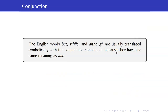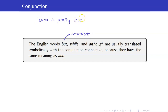Take note that the English words 'but,' 'while,' and 'although' are usually translated symbolically with the conjunction connective because they have the same meaning as 'and.' In the English language, we are using these words to just show contrast, but technically speaking it is just the same as 'and.' Suppose that we have the statement 'Lara is pretty but disorganized.' This is just saying that Lara is pretty and disorganized.